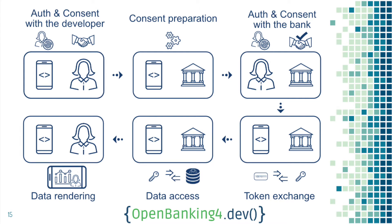When the TPP has got the key, it can use it to access the data and call the bank API. Once you've got the data, the last step is about presenting the service using that data. You may not even present the data to Alice — you may have done some analysis, a security risk assessment, or whatever.